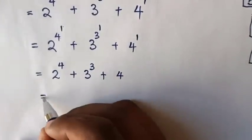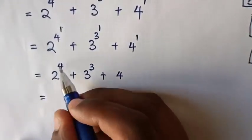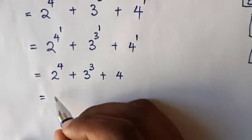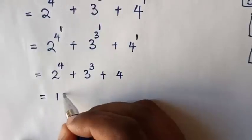Then this will be equal to 2 power of 4, which is 4 times 4.